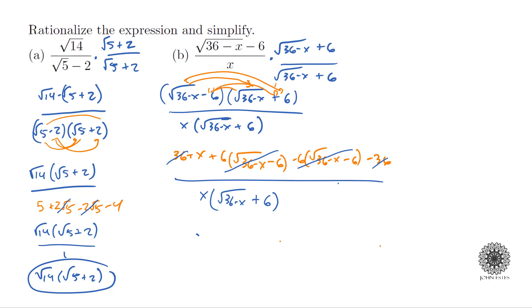What I'm really left with in the numerator is just negative x. Since there's an x in the denominator being multiplied across everything, I can cancel the x over x. So in the numerator there's nothing left except 1, and in the denominator I have the square root of 36 minus x plus 6. To clarify: I had an x in the numerator and an x in the denominator, and when I cancel those out I'm left with just 1 on top. I hope this makes sense — if you have any questions please let me know, and thank you for watching.